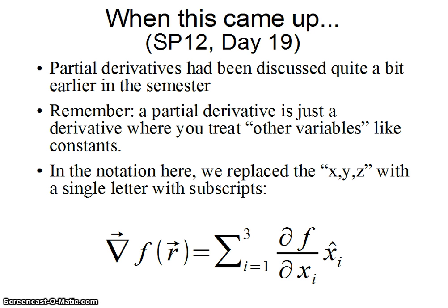So I'll go back and forth between the two notations, and I'm kind of doing that on purpose, so that you get comfortable with looking at it either way, and you get comfortable with the idea that the sum is just a sum, it's just adding things. And that whether I call these variables x1, x2, x3, and their unit vectors x1 hat, x2 hat, x3 hat, or I call them x, y, z with unit vectors i, j, k, it's the same thing.